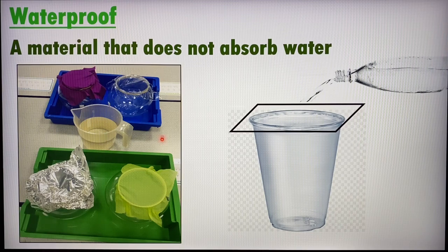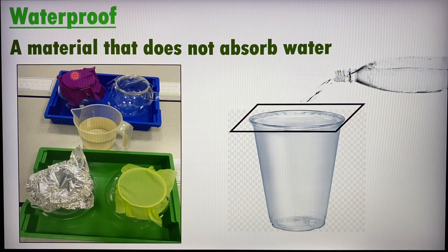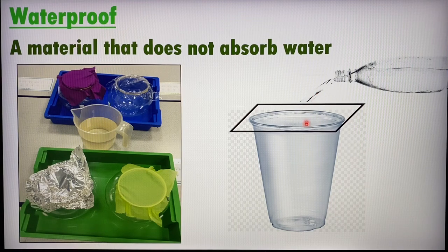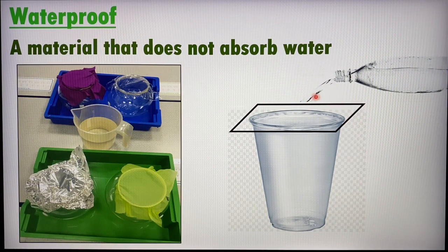Testing for waterproof is another important property. Waterproof is a material's ability to not absorb water. A simple experiment: place the material on top of a cup — like aluminum foil, rubber, plastic, or fabric — and pour water on it. If the water seeps through and is contained in the cup, the material is not waterproof. If it's waterproof, the water will just flow away from the cup surface.